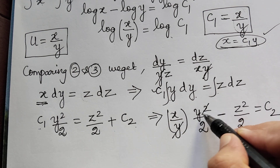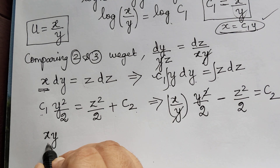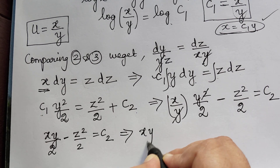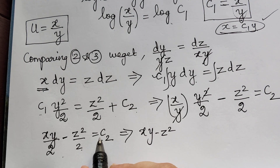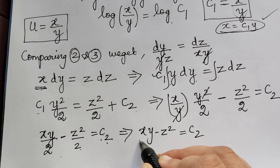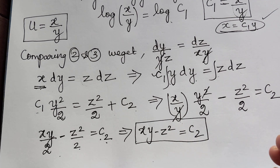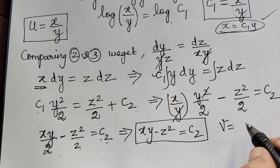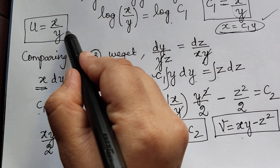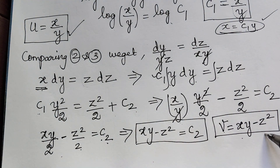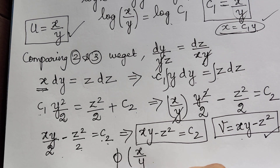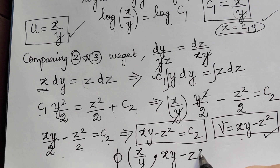Cancelling one y, we have xy by 2 minus z squared by 2 equal to c2. This gives xy minus z squared over 2 equal to c2, and since 2c2 is again a constant, we represent it as c2 itself. So xy minus z squared equals c2, meaning the second solution v equals xy minus z squared. The general solution phi(u, v) equal to 0 is phi of (x/y, xy minus z squared) equal to 0.